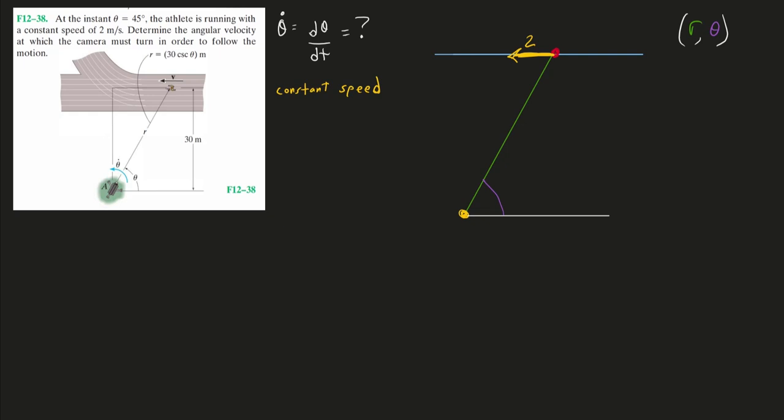So I have my angle at this instant, 45 degrees. Of course I have the distance from my tracking point, my origin, to my runner, that r. Let me set up my coordinate system here. My transverse, that theta direction, is going to be here. And my radial direction is of course outwards, in the direction of increasing r.